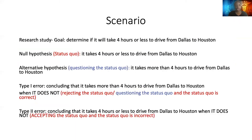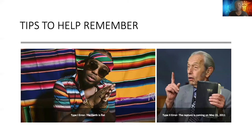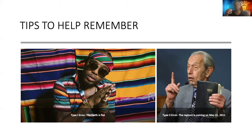I'm going to use real-world examples to help this sink in. To the left, I have an artist, a rapper by the name of B.O.B. The reason I'm using him is because he believes that the earth is flat. As we all know from school and reading, the earth is not flat, but he believes it is. So he is rejecting the null hypothesis — believing the earth is flat even though it's not. He is a good example of someone committing a type one error — he is rejecting the status quo.